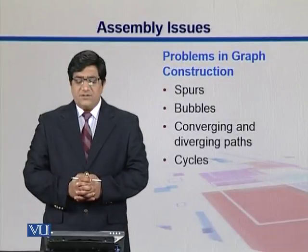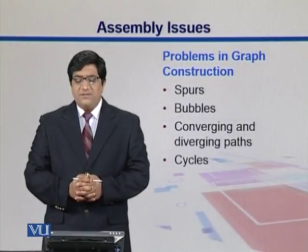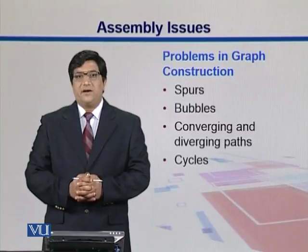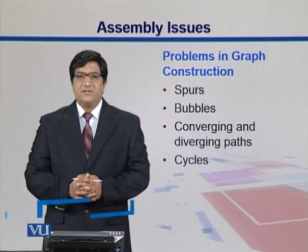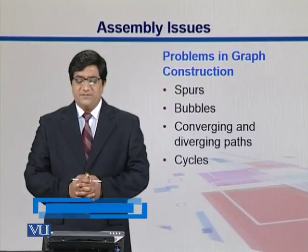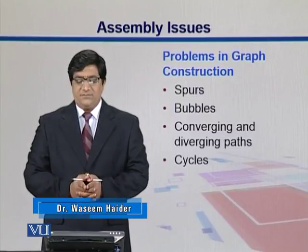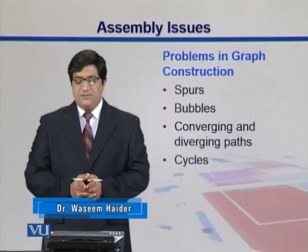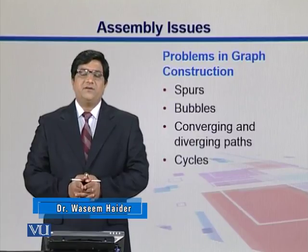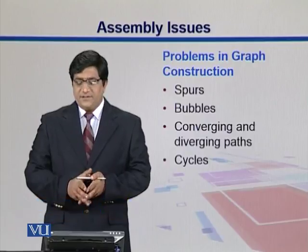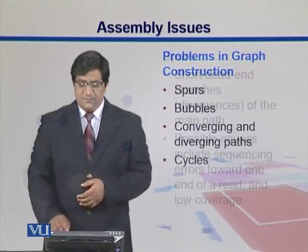There are different issues in genome assemblies. Some of them are related with the graphs, so let's talk about them first. One is spurs, we can have bubbles, we can have converging and diverging paths, and sometimes we observe some cycles. Let's take them one by one.